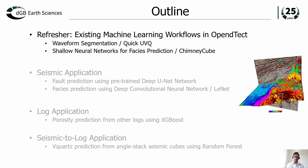We'll first start by going over some existing machine learning workflows, namely waveform segmentation and the use of shallow neural networks for facies prediction. After that, we'll dive deeper into newer algorithms for seismic applications, log applications, and seismic-log applications. For seismic applications we are going to cover fault prediction using a pre-trained deep UNET network, as well as seismic facies prediction using a deep convolutional neural network. For log applications we are going to go over a workflow on predicting porosity log from other existing logs using the XGBoost algorithm.